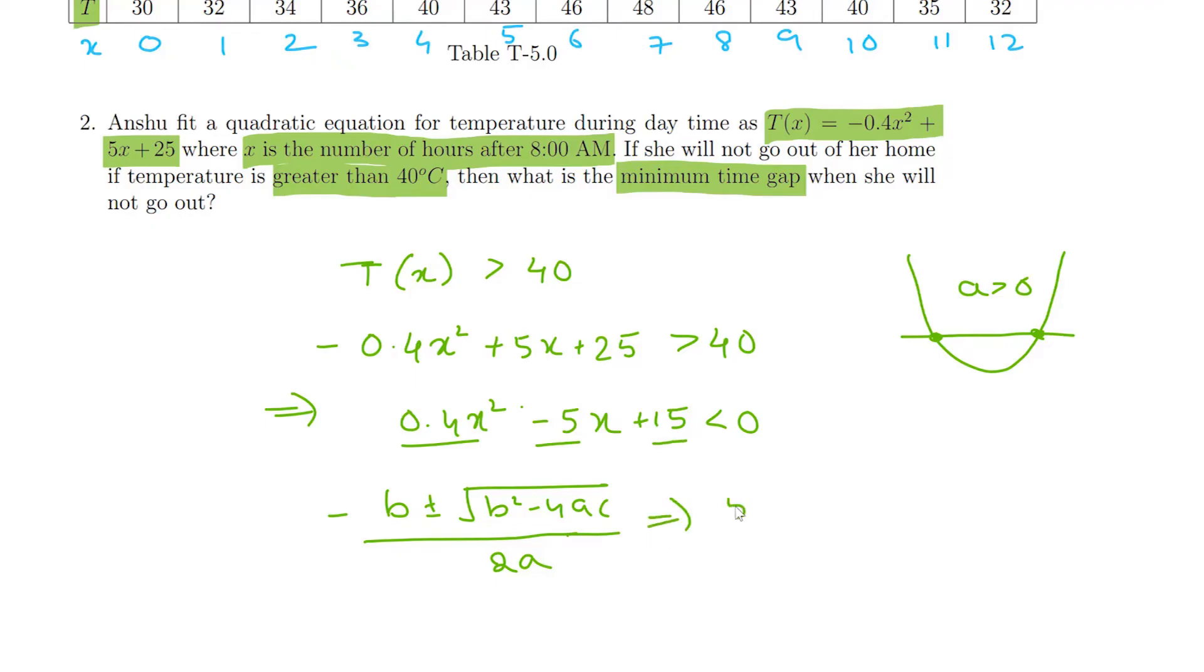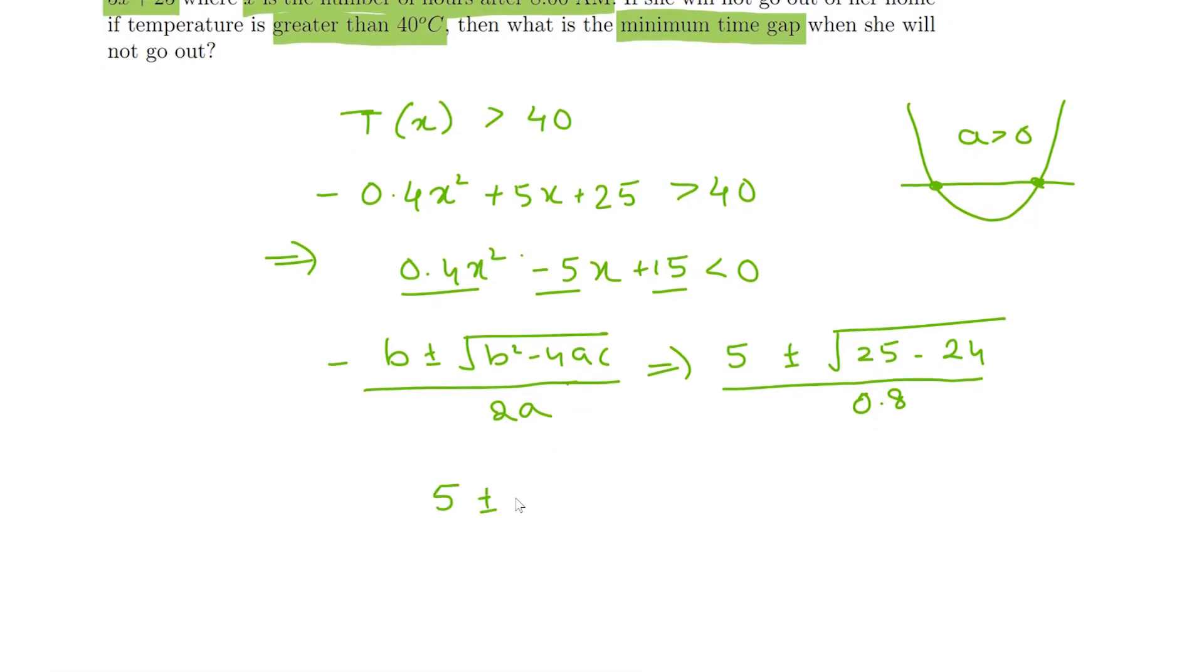So these roots will come out to be 5 plus or minus under root of 25 minus 4 into 0.4 into 15, that is 16 into 0.4, that is 6.4, that is 24, divided by 2a is 0.8. So our roots are 5 plus or minus 1 divided by 0.8, which is one is 6 by 0.8 and the other is 4 by 0.8. That gives us the roots as 7.5 and 5.